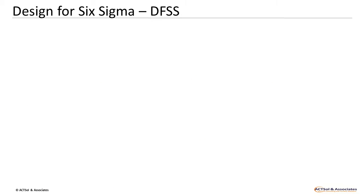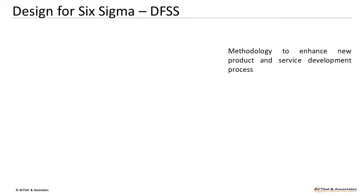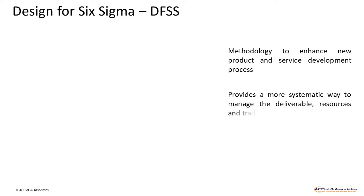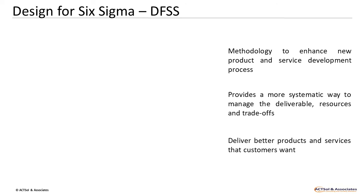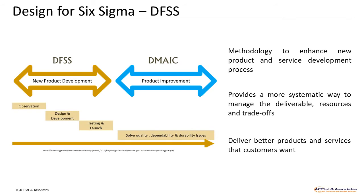Design for Six Sigma, or DFSS. It is the methodology to enhance new product and service development processes. It provides a more systematic way to manage the deliverables, resources, and trade-offs. It helps you to deliver better products and services that your customers want and are willing to pay for at Six Sigma level. Look at the schematic on the screen — you will understand the difference between DFSS and DMAIC easily.